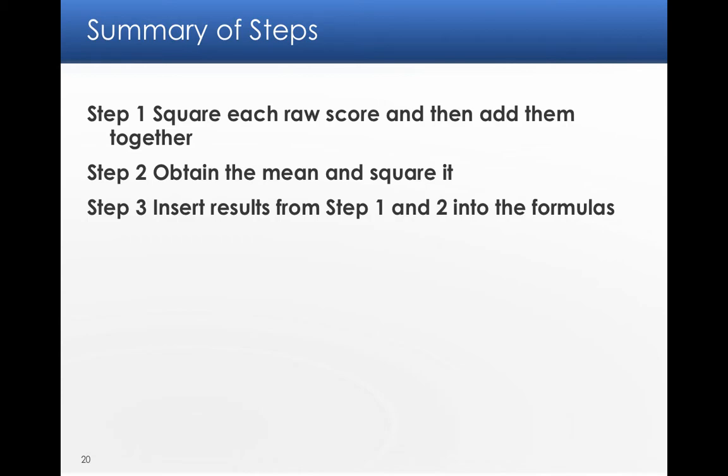So again, for the raw score method, we're going to square each raw score, add them together. Take the mean, square it. And then we're going to take those steps and plug it into the formulas.